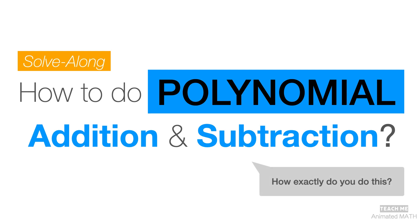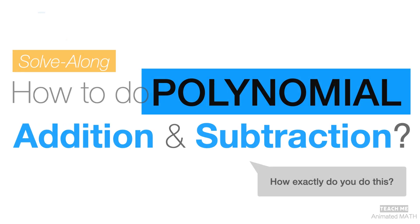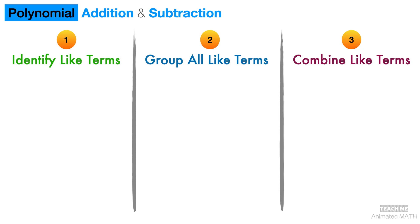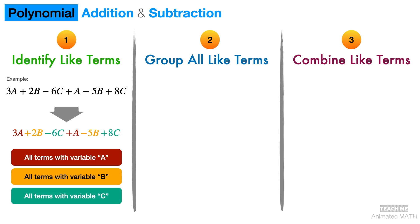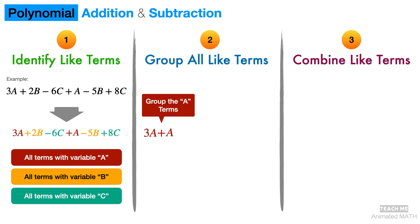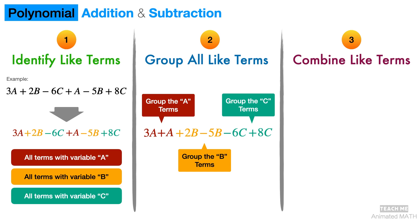So how exactly do you do that? The most important thing to remember when doing polynomial addition and subtraction is to first identify which terms are the same. Next is to group all like terms. And last is to combine like terms using addition and subtraction.